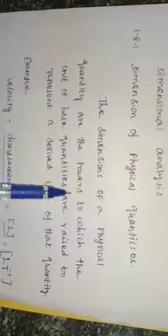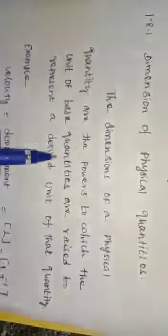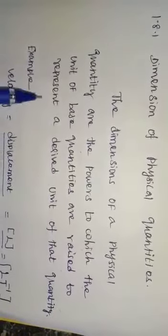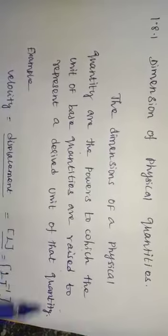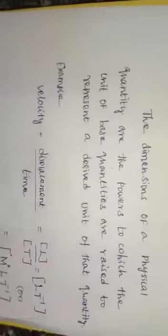The definition of dimension of physical quantity: the dimensions of a physical quantity are the powers to which the units of base quantities are raised to represent the derived unit of that quantity. For example, consider velocity.